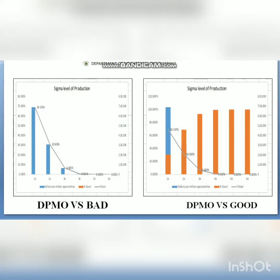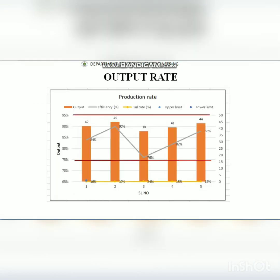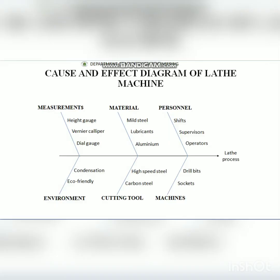Once we get the DPMO broken into bad and good percentages, we make a case study of production data — analyzing input quantities and the OK vs. not-OK products — to find efficiency rate and failure rate percentage. From that, we determine the upper limit and lower limit percentages for output rate, enabling us to build a cause-and-effect diagram.